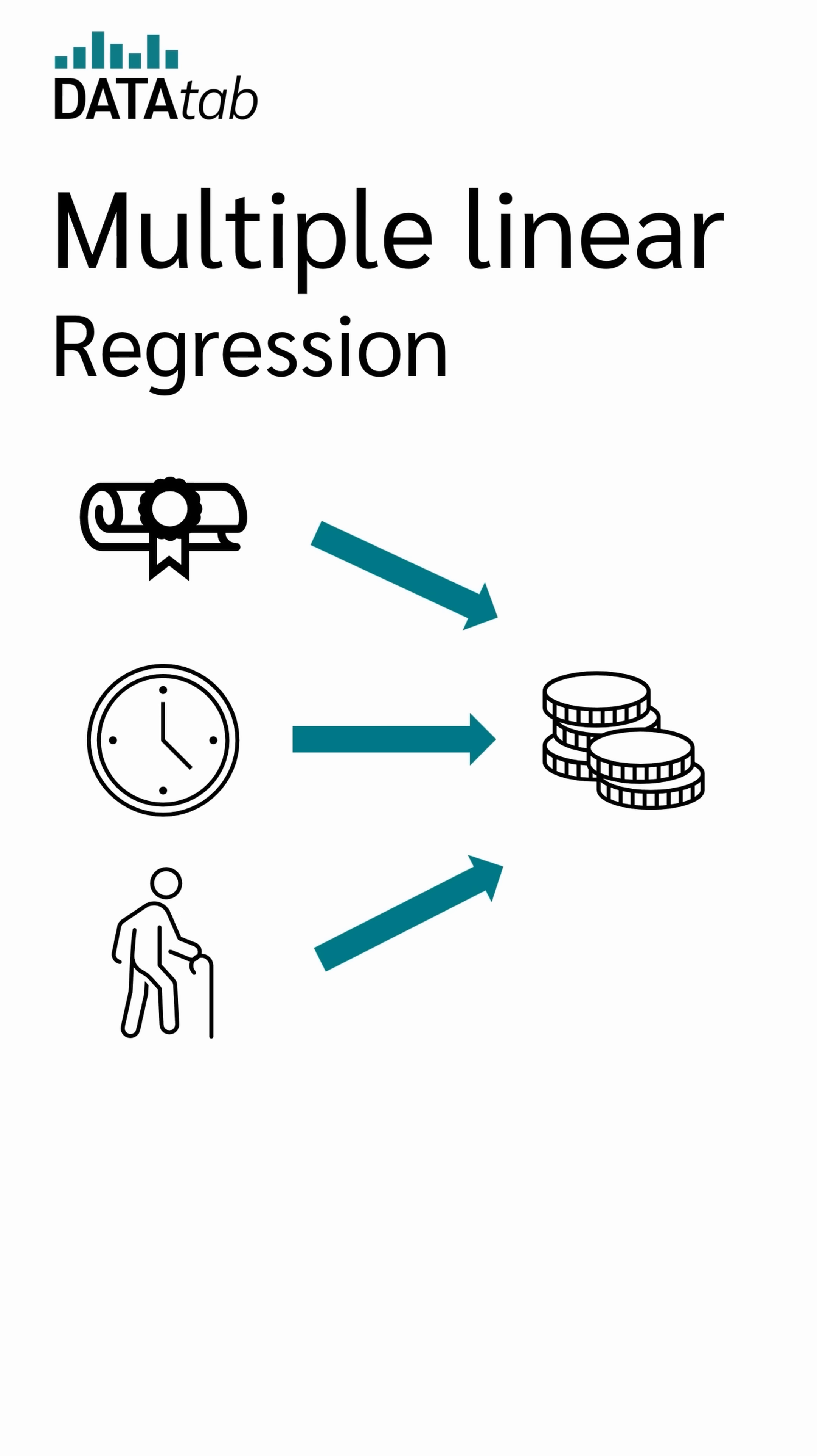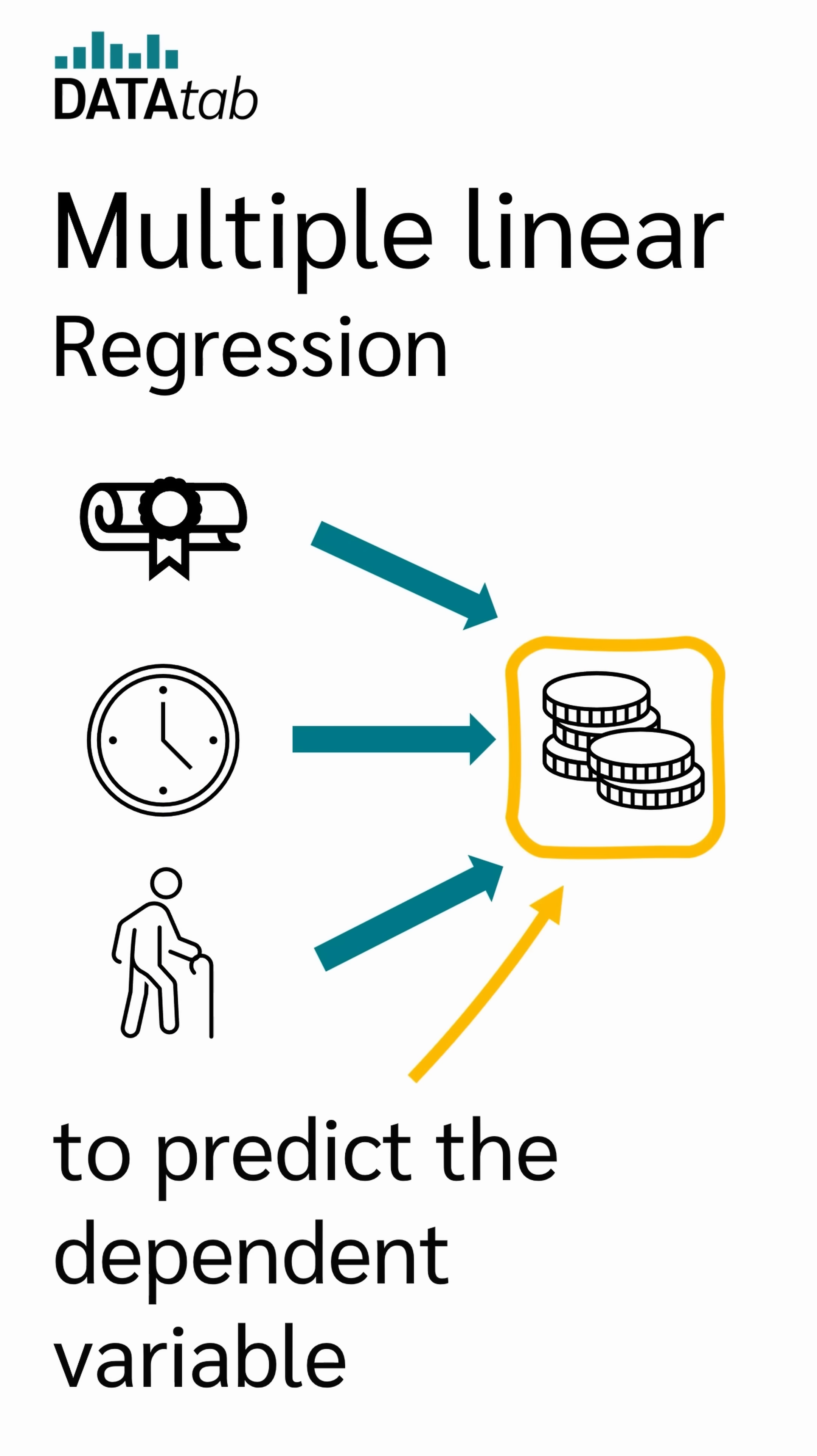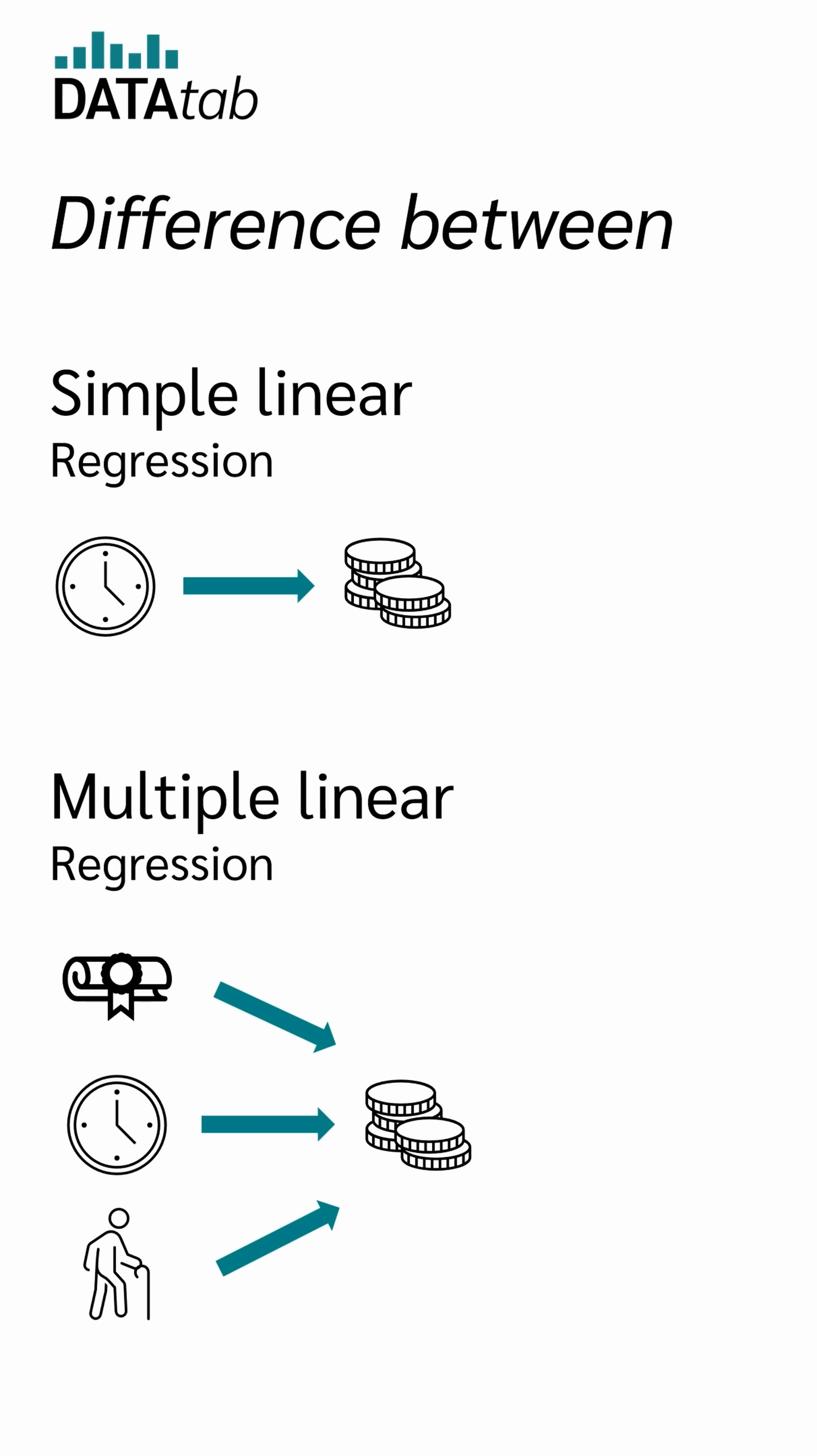Multiple linear regression, on the other hand, uses several independent variables to predict or infer the dependent variable. Therefore, the difference between a simple and a multiple regression is that in one case only one independent variable is used and in the other case several.